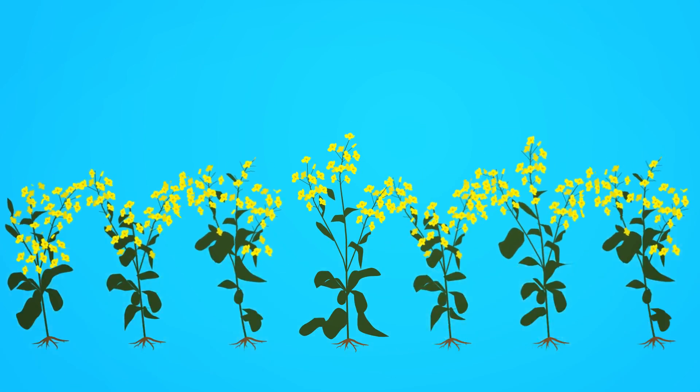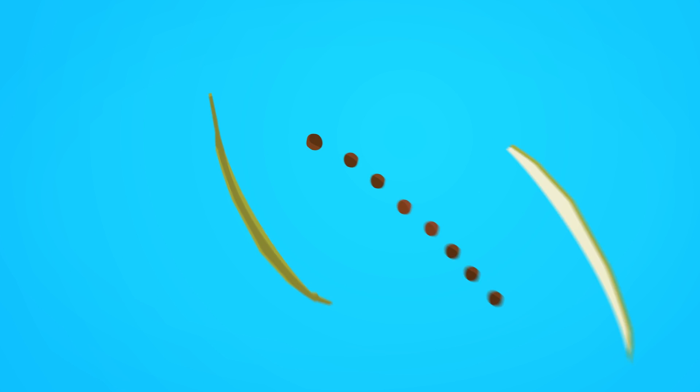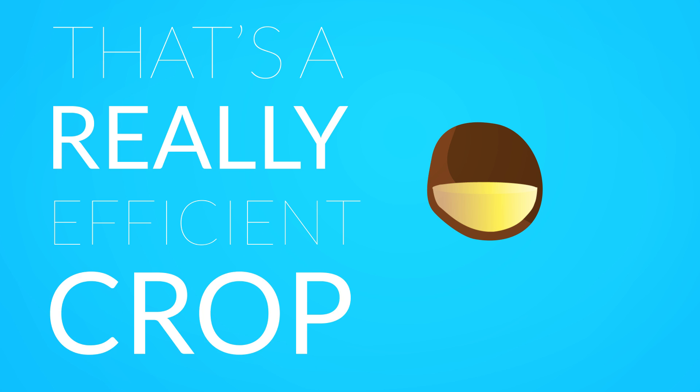By harvest time the flowers have been pollinated, formed pods and filled up each tiny canola seed with up to 43% canola oil. That's a really efficient crop.